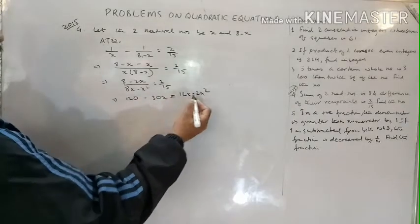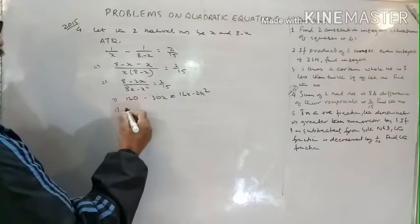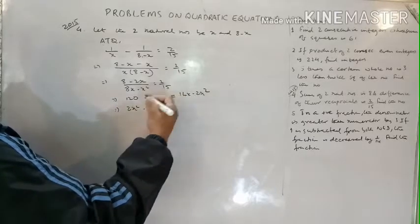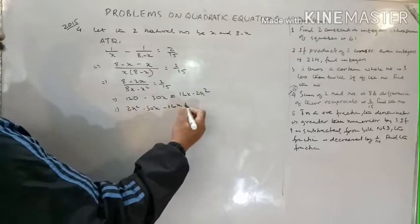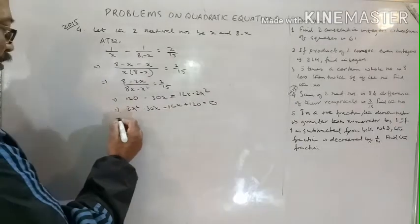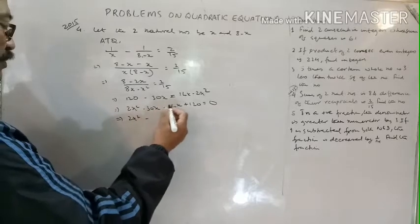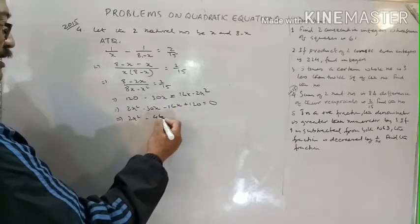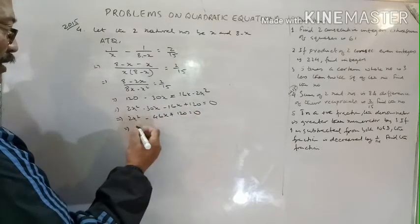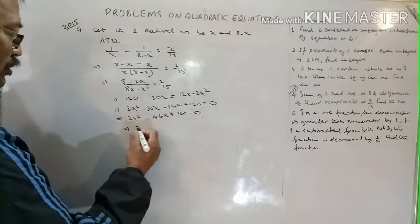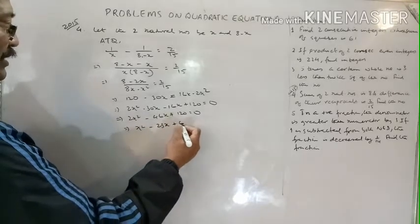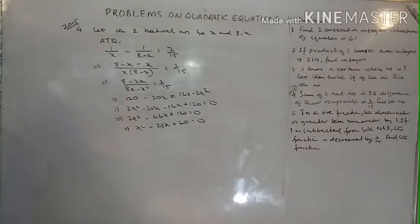Bringing all terms to one side in descending power of x: 2x squared minus 30x minus 16x plus 120 equals 0, which gives 2x squared minus 46x plus 120 equals 0. Dividing throughout by 2: x squared minus 23x plus 60 equals 0.